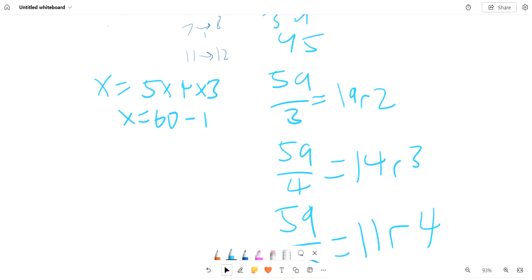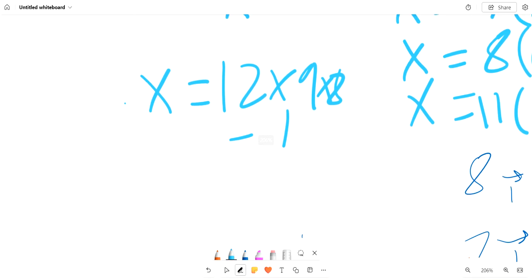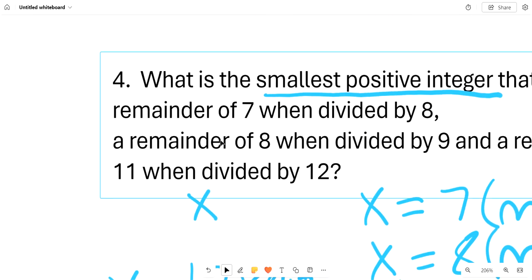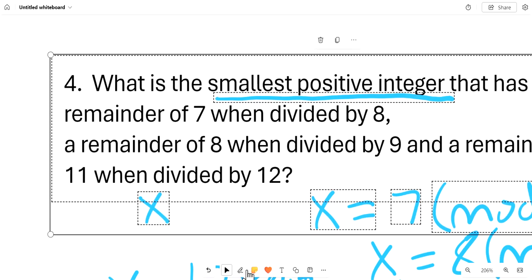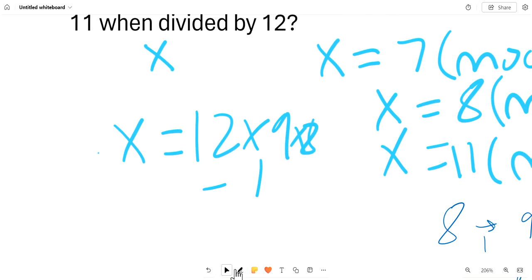You can see that this works, so if we just get the LCM, because it asks for the smallest possible positive integer, then we can just have the LCM, which is the least common multiple, of 12, 9, and 8.